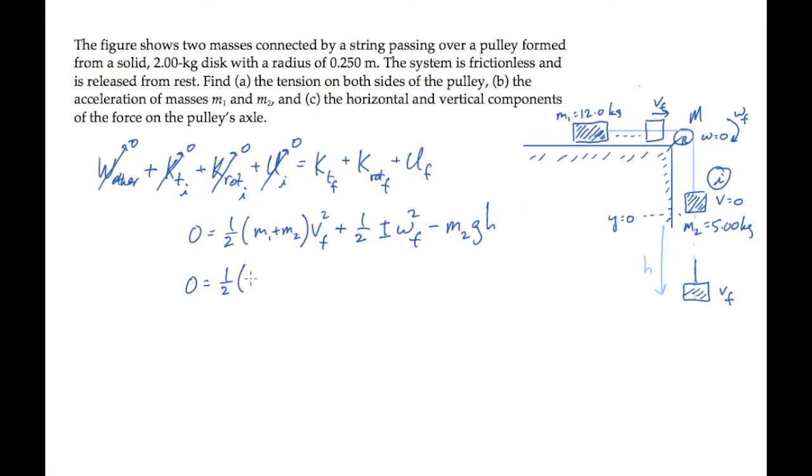Rewriting the middle term on the right hand side, we can substitute the moment of inertia of the pulley about its center. That's 1 half mr squared. So we have 1 half times 1 half mr squared, 1 quarter mr squared. And we can replace omega final with v final over r, using v tangential equals r omega, because the string rolls over the pulley without slipping.